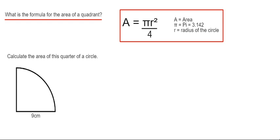Hi guys, welcome back. Today I'm going to answer the question: what is the formula for the area of a quadrant? The formula is shown in the red box here. It's A equals pi r squared divided by 4.